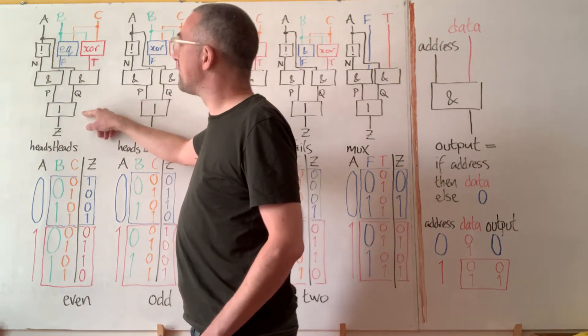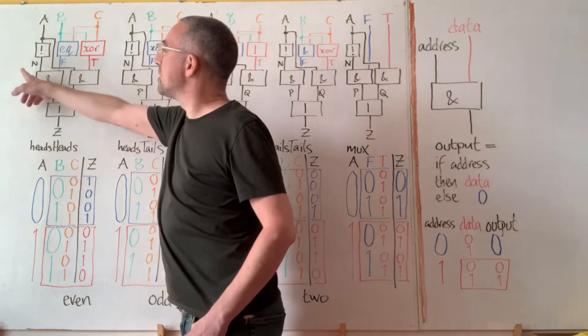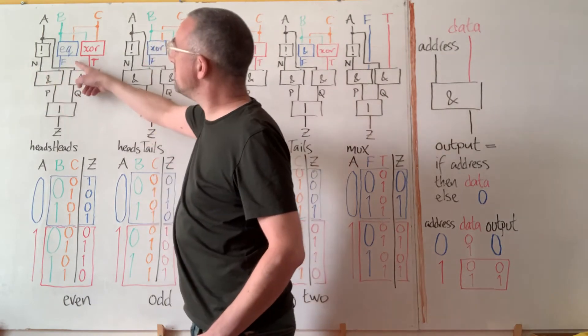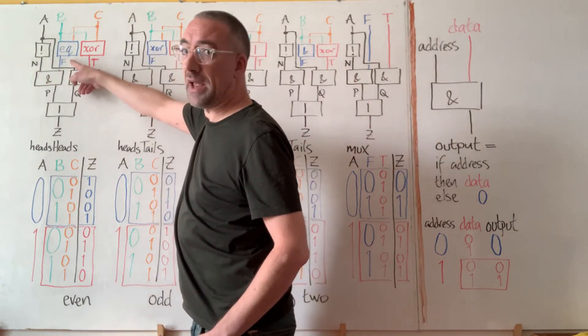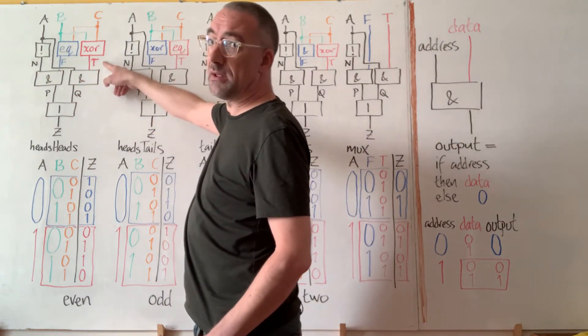So what we have is a circuit whose logic uses A to choose between the F signal if A is false and the T signal if A is true.